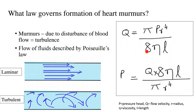Poiseuille's law is governed by this equation: Q = π × P × r⁴ divided by 8 × η × L. Q is the velocity of blood flow, P is the pressure head or the pressure gradient between two points of a blood vessel, r is the radius of the blood vessel, η is the viscosity of the blood, and L is the length of the blood vessel. When you rearrange and solve for pressure, pressure becomes directly proportional to flow velocity, viscosity, and length of the blood vessel, and inversely proportional to the radius. So when the pressure gradient across the blood vessel or chamber increases because of these factors, turbulence of blood flow increases, which gives rise to murmurs.